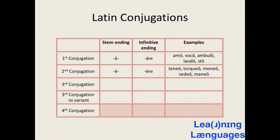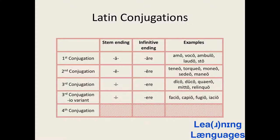Now that we've looked at all this information, let's fill out the two remaining rows of this table. To clarify: all third conjugation verbs have an infinitive that ends in -ere. However, one set of third conjugation verbs has a first person present tense form which ends in -io, and the other does not. Furthermore, this group is known as IO-variant third conjugation verbs. Both groups of third conjugation verbs have a present tense stem that ends in a short I.